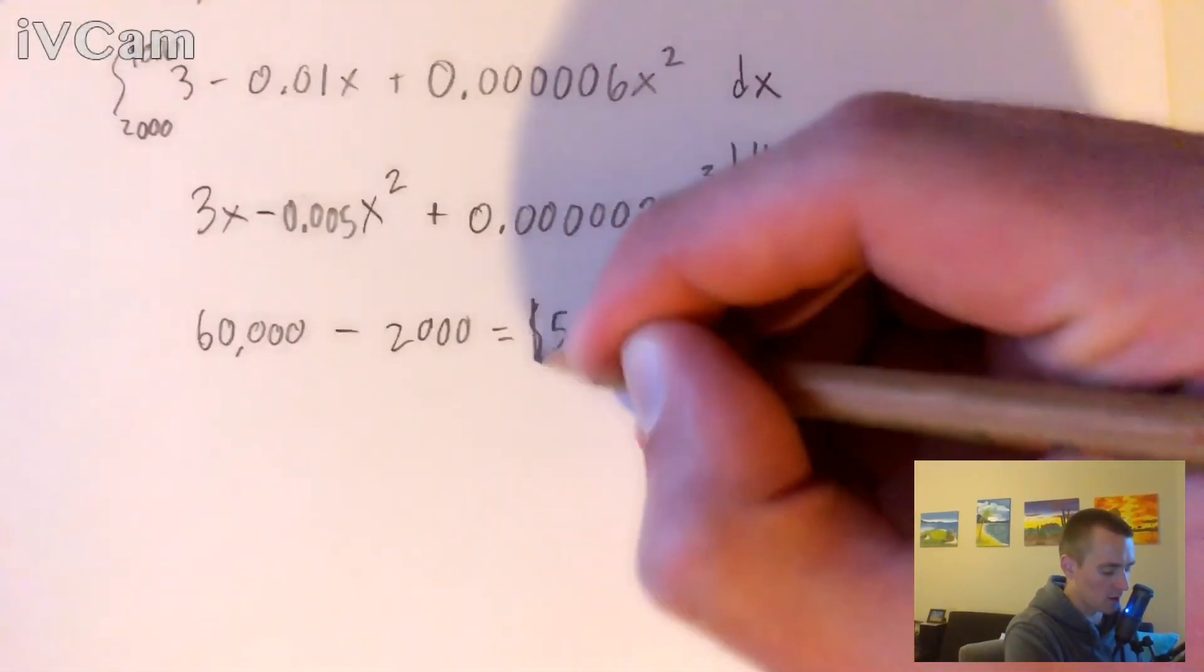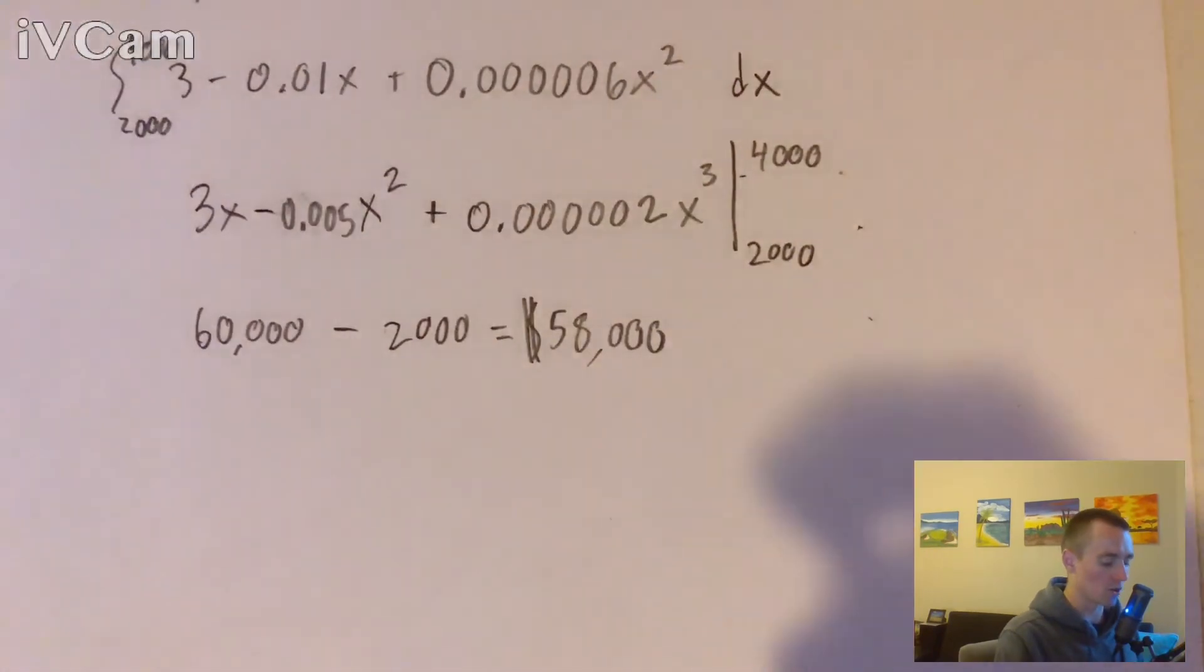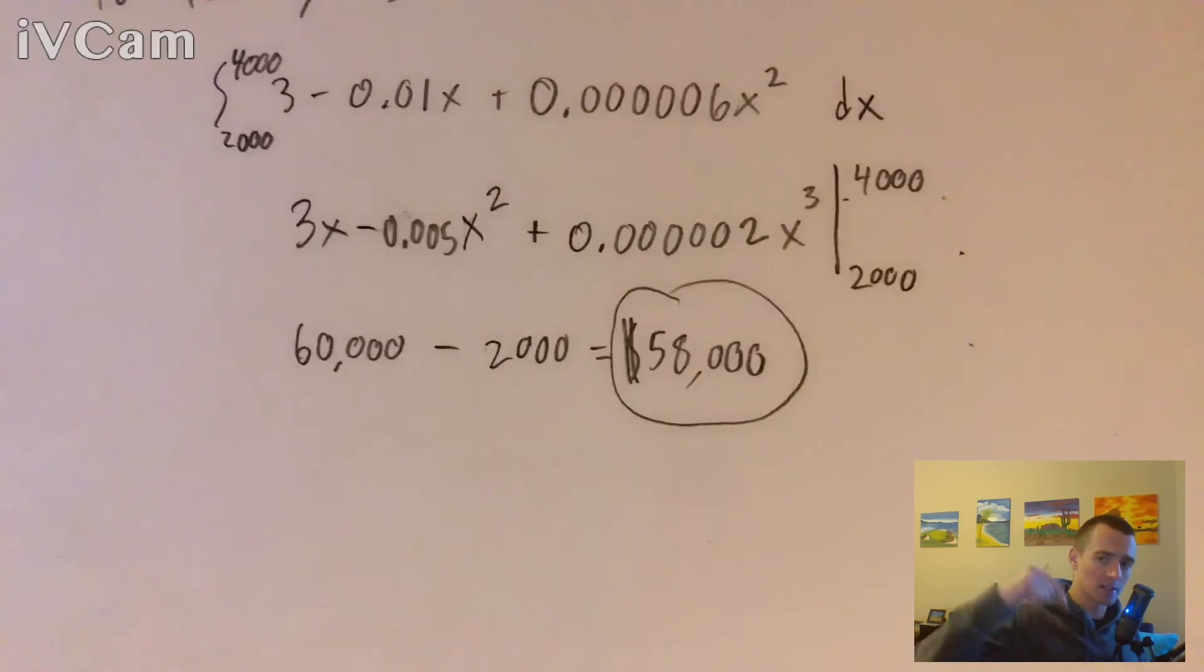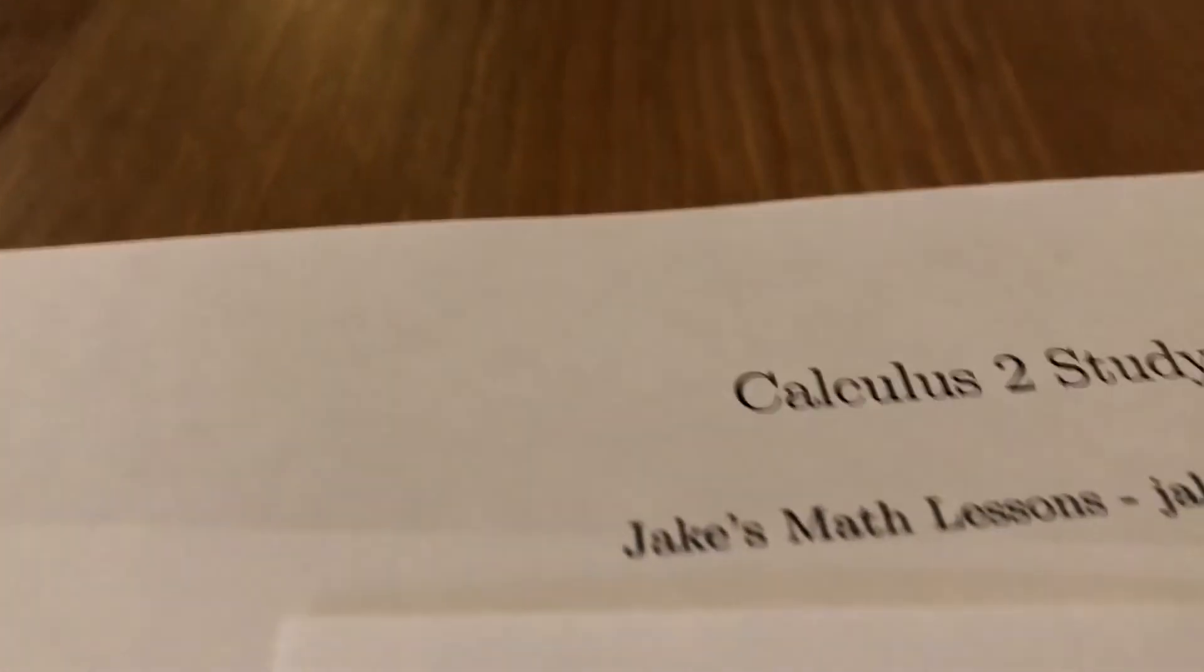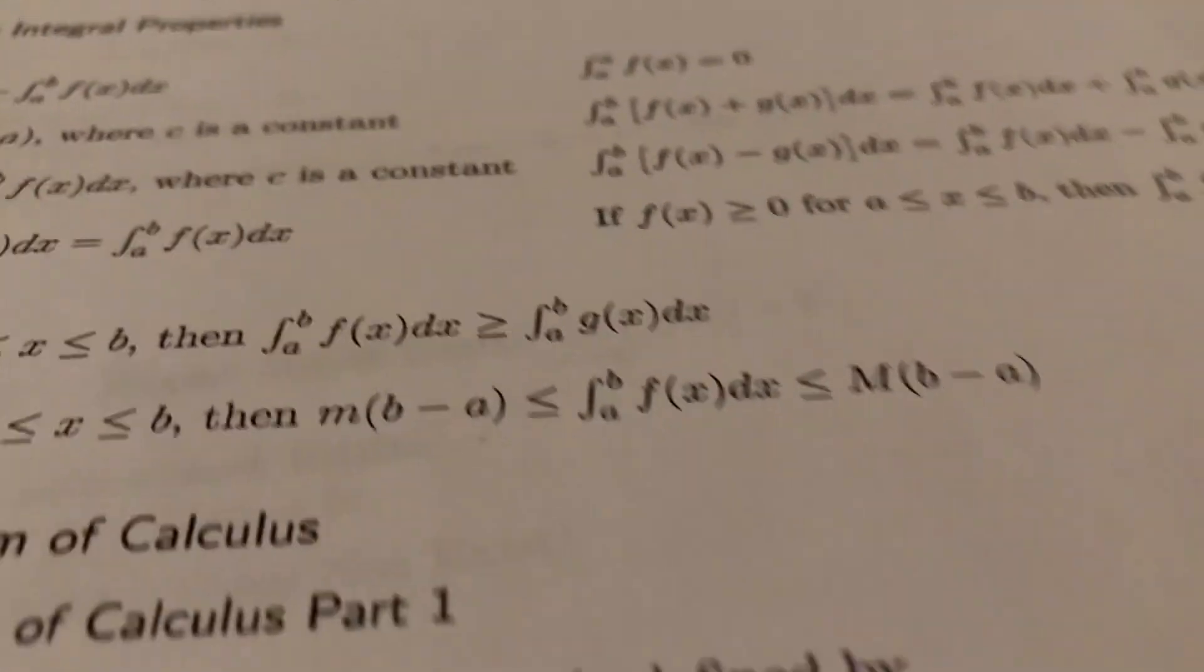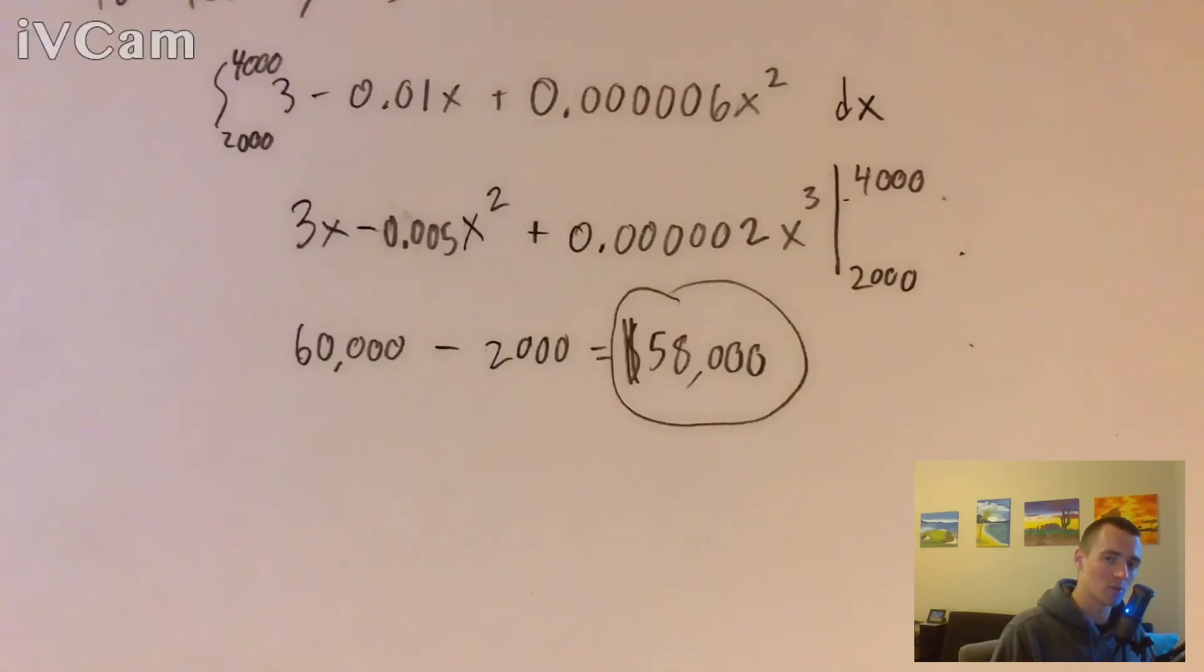Like I said, our units are going to be dollars. So our answer is going to be $58,000. And the link to go check out my Calculus 2 study guide is down in the description. Go check that out. It just came out. It's packed full of super helpful formulas and shortcuts to help you get through any calculus two problems. Thank you and see you next time.